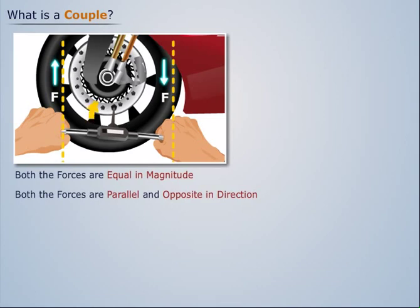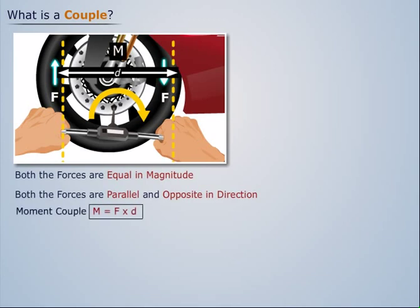Thus, they form a couple. If D is the separation between both the forces, then the moment of couple M is equal to F into D.